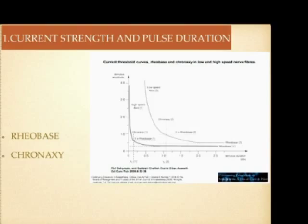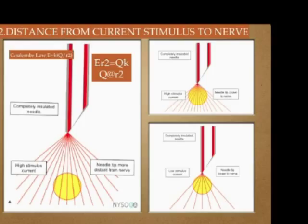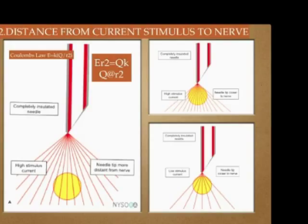The next basic concept is Coulomb's Law: the distance from the current stimulus to the nerve. The intensity of the current is equivalent to a constant times the minimum intensity at the needle tip, divided by the square of the distance between the needle and the nerve. Rearranged, the intensity of the current is directly proportional to the square of the distance between the nerve and the needle. Whenever the needle is far from the nerve, it requires more current to stimulate the nerve; if it comes closer, it requires lesser current. This is the basis of peripheral nerve stimulation.